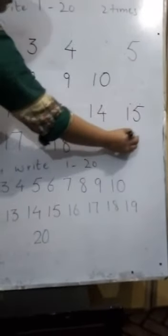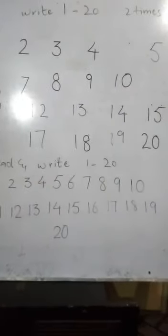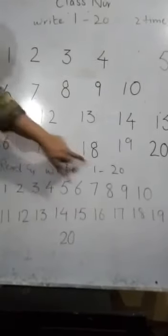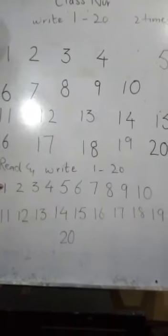19. 20. 1 to 20 is complete now. Read and write 1 to 20 again. Read with me. 1.